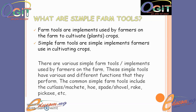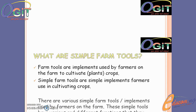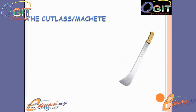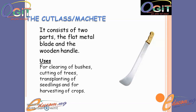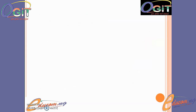Subsistence agriculture is a type of agriculture in which farmers cultivate a small piece of land. Next in line is the cutlass or matchet. The cutlass consists of two parts: the flat metal blade and the wooden handle. The uses of the cutlass include clearing of bushes, cutting down of trees, transplanting of seedlings, and harvesting of crops.